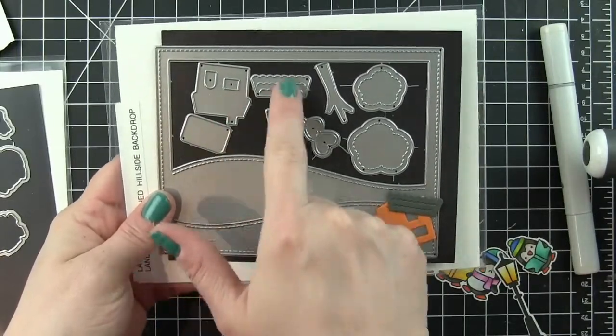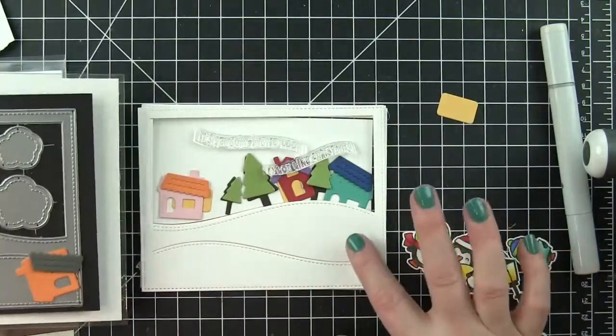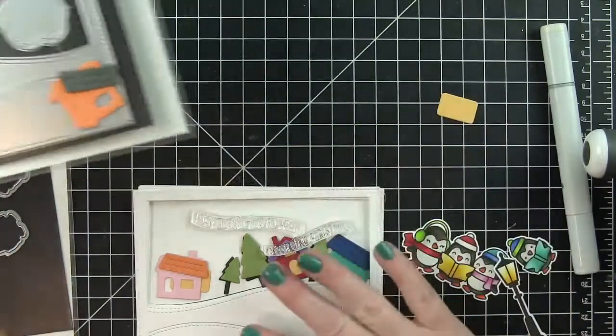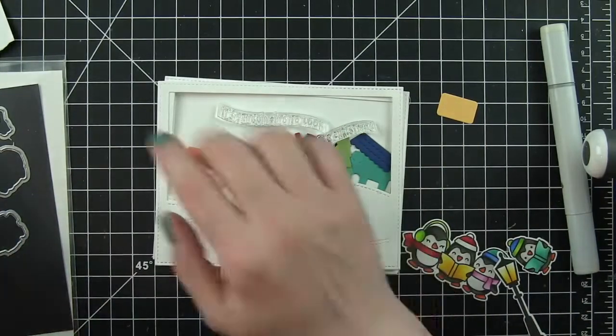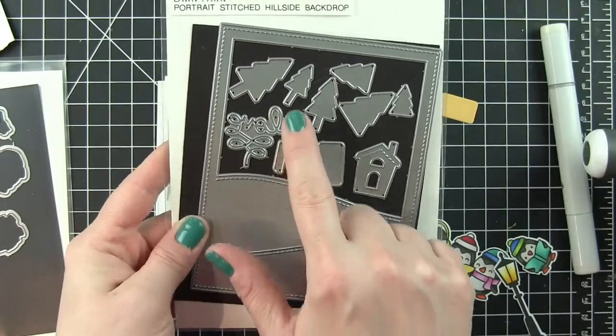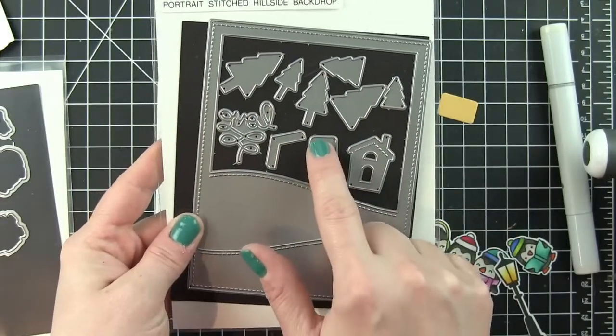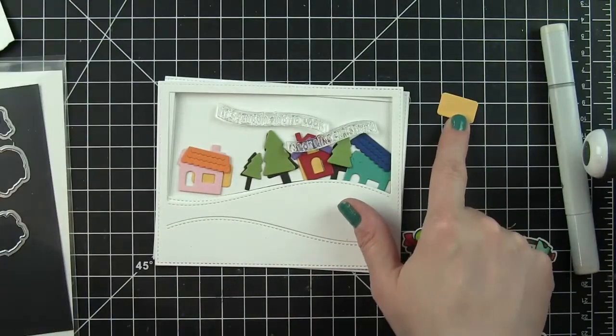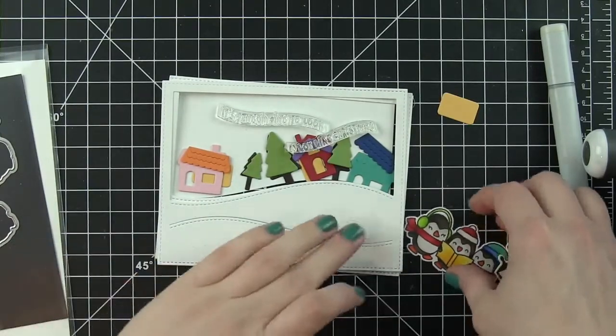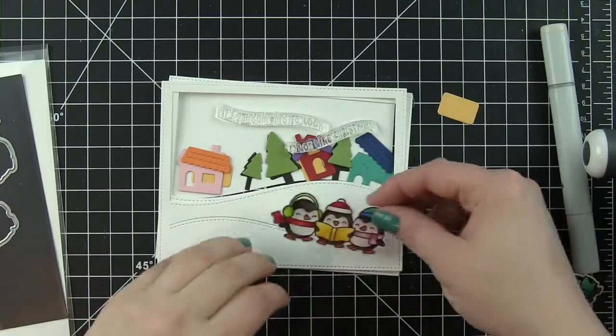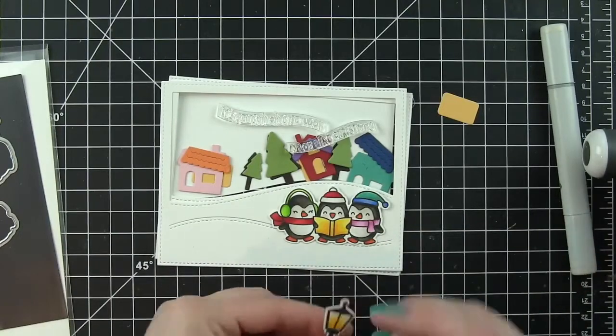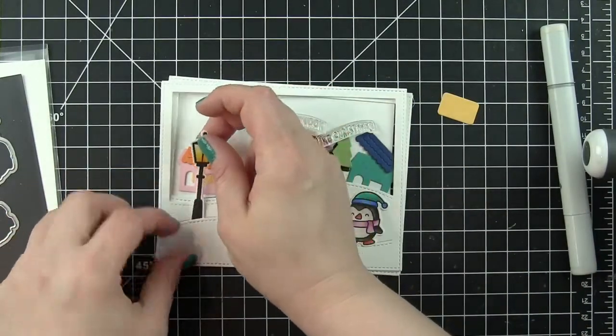This is the landscape stitched hillside backdrop. I absolutely love both this and the portrait. They create fantastic scenes immediately. I am a huge fan of creating scene cards and anything that I can use that helps that makes me so super happy. I used a house and the frame from the landscape, but this is the portrait. It has those fantastic trees, another little house, and I'm going to mix and match those. It also has these little rectangles that you can die cut and pop behind the door and window openings, and in this instance, it makes it look like the lights are on.